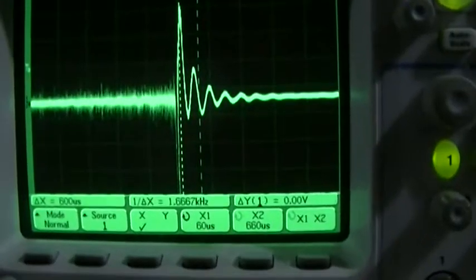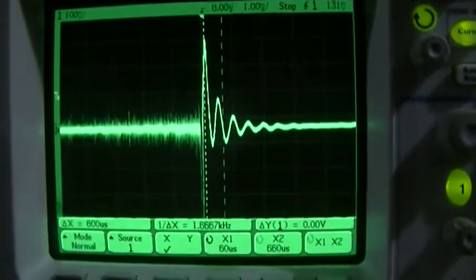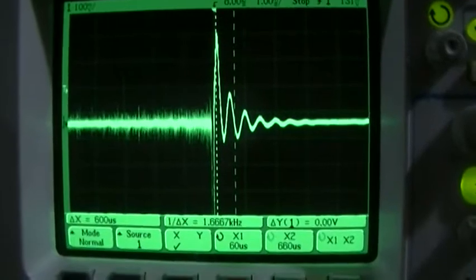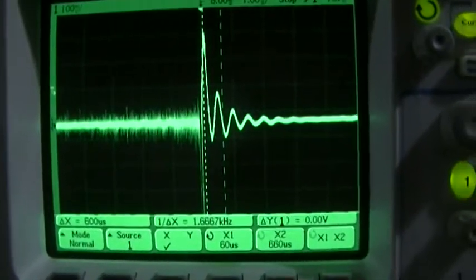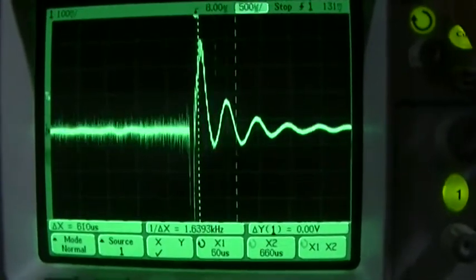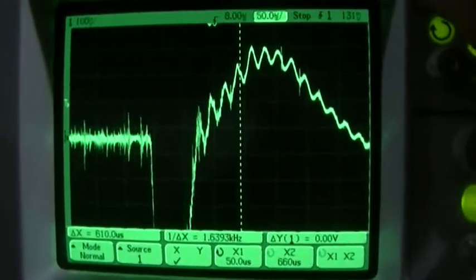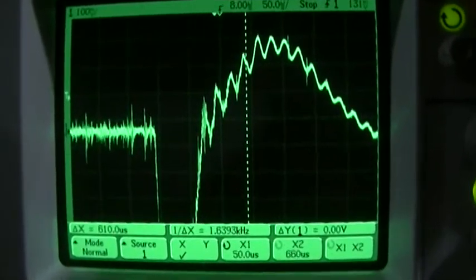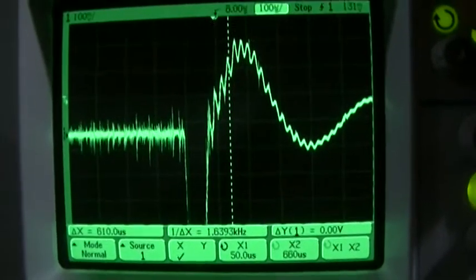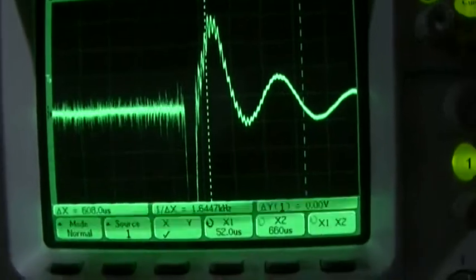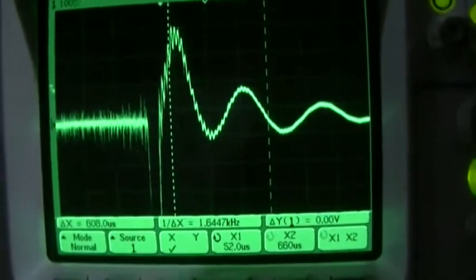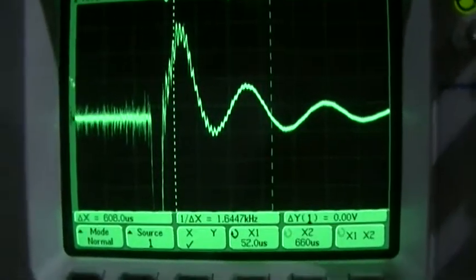I'm using the HAARP magnetometer to look at a lightning strike that just happened. This was really nearby, so it actually went way off the scale down to the bottom there. The point I want to make is that after the lightning hits, there's this low-frequency stuff that happens, and that is the same thing